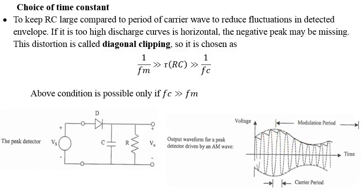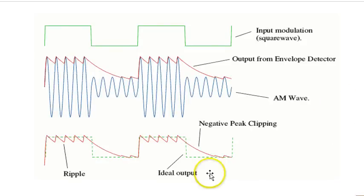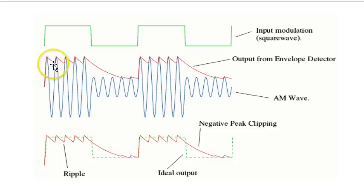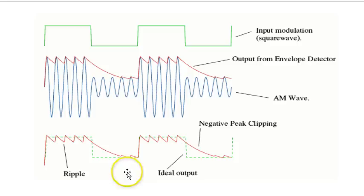To illustrate diagonal clipping: with a square wave input as the modulating signal and a carrier, envelope detection shows ripples at the positive peaks. However, for the negative portion of the modulating waveform, a flat region appears — the clipping of the negative peak is taking place. This is called diagonal clipping and must be avoided.